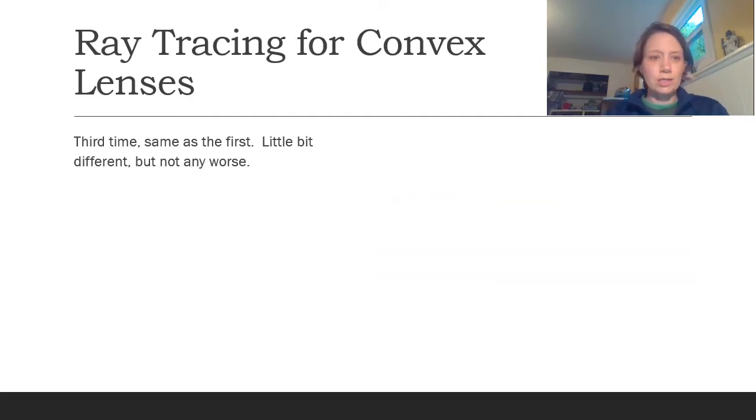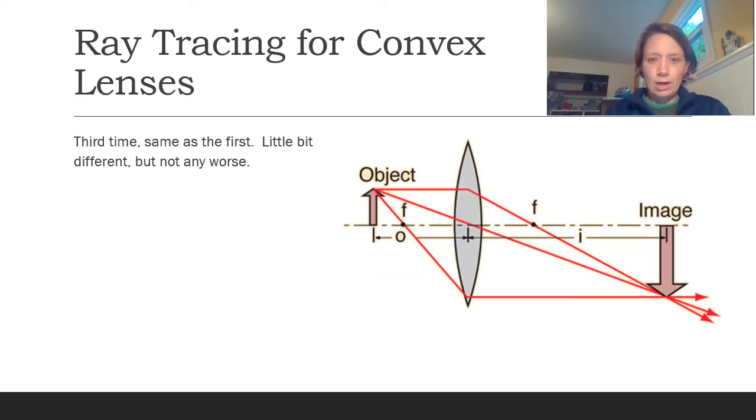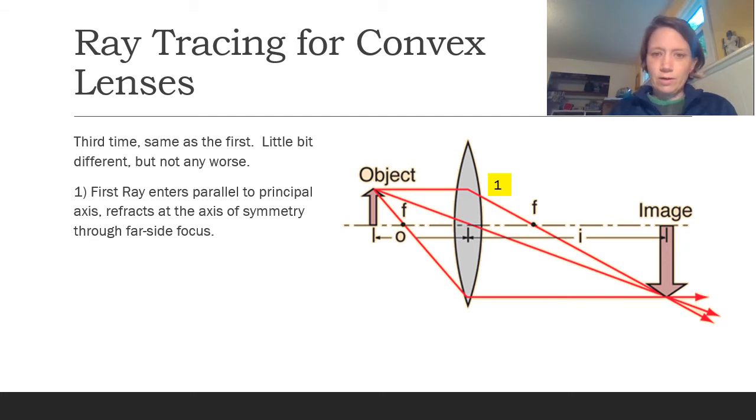Ray tracing for convex lenses is really straightforward. We're going to choose two rays. This diagram actually shows three possible rays. I tend to just focus on two because that's what you need. You only need a minimum of two rays. Ray number one is just the definition of a convex converging lens, which is the first ray enters parallel to the principal axis. It hits that axis of symmetry in the middle at this point right here, and then it goes through the focus on the back side.